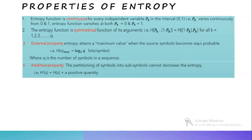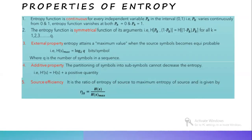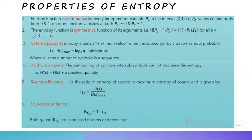The fifth one is source efficiency. Source efficiency is given by the ratio of entropy of the source to maximum entropy of the source, and is given by eta-s equal to H of S divided by H of S max. The sixth one is source redundancy: r-eta-s equal to 1 minus eta-s, where both source efficiency and source redundancy are expressed in terms of percentage.